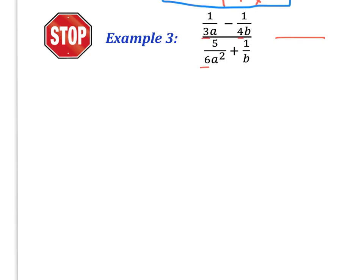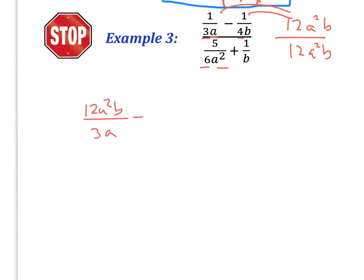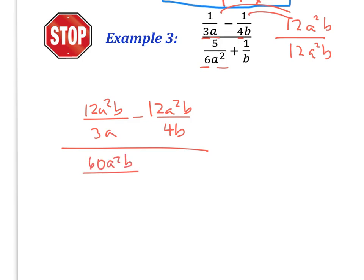I see a 3, a 4, and a 6, so it looks like all three of those numbers go into 12. I see an A, an A squared, and a B. Remember, you always take the highest exponent, so A squared is going to be part of our LCD, and we need a B. So I'm going to distribute 12A²B all the way through — similar to example 2. That gives me 12A²B over 3A, minus 12A²B over 4B in the numerator, and in the denominator 60A²B over 6A² plus 12A²B over B.